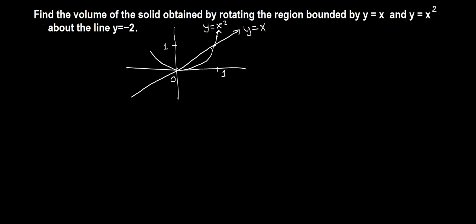Now we want to rotate this region about the line y equals negative 2. So negative 2 is at negative 1, negative 2. We want to rotate this region about y equals negative 2.